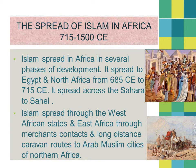The spread of Islam in Africa from the period 715 to 1500 CE occurred in several phases. It spread to Egypt and North Africa from 685 CE to 715 CE, then across the Sahara to the Sahel. Islam spread through the West African states and East Africa through merchant contacts and long-distance caravan routes to Arab Muslim cities of Northern Africa. It was the intermingling of traders that brought about the spread of Islam — not consciously but subconsciously.